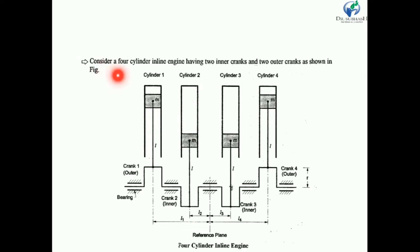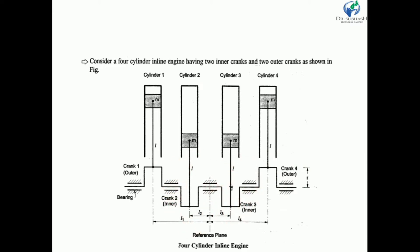Let us consider the four cylinder inline engine having two inner cranks and two outer cranks. There are four cranks: Crank 1, Crank 2, Crank 3 and Crank 4. Out of these four cranks, Crank 1 and Crank 4 are known as outer cranks, and Crank 2 and Crank 3 are known as inner cranks.